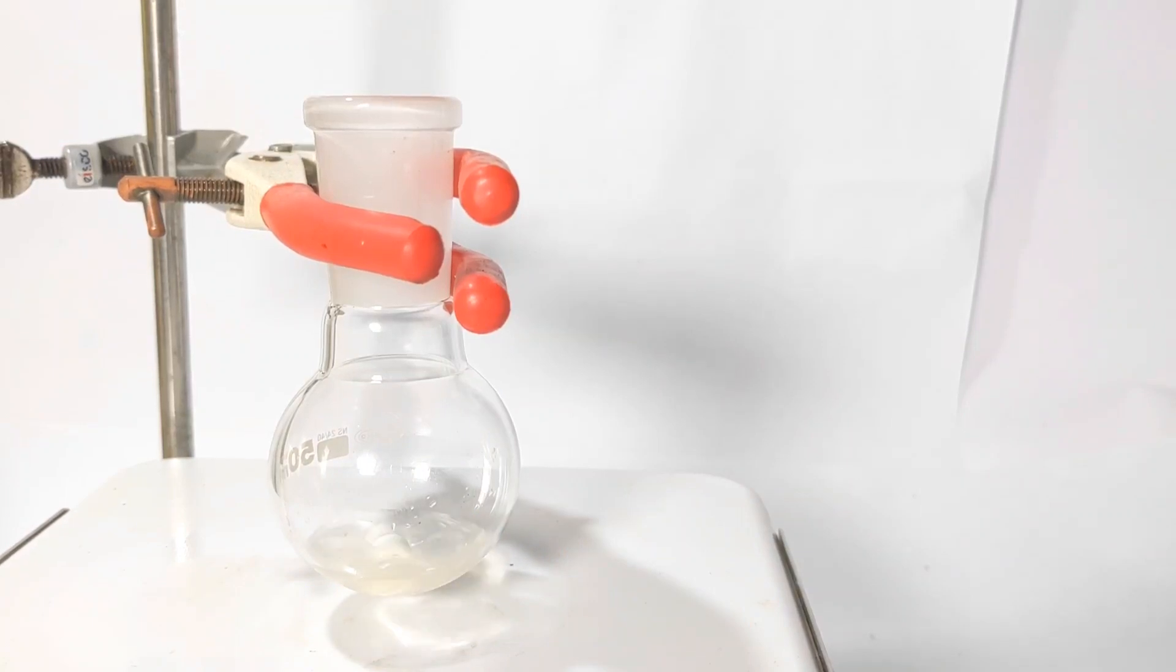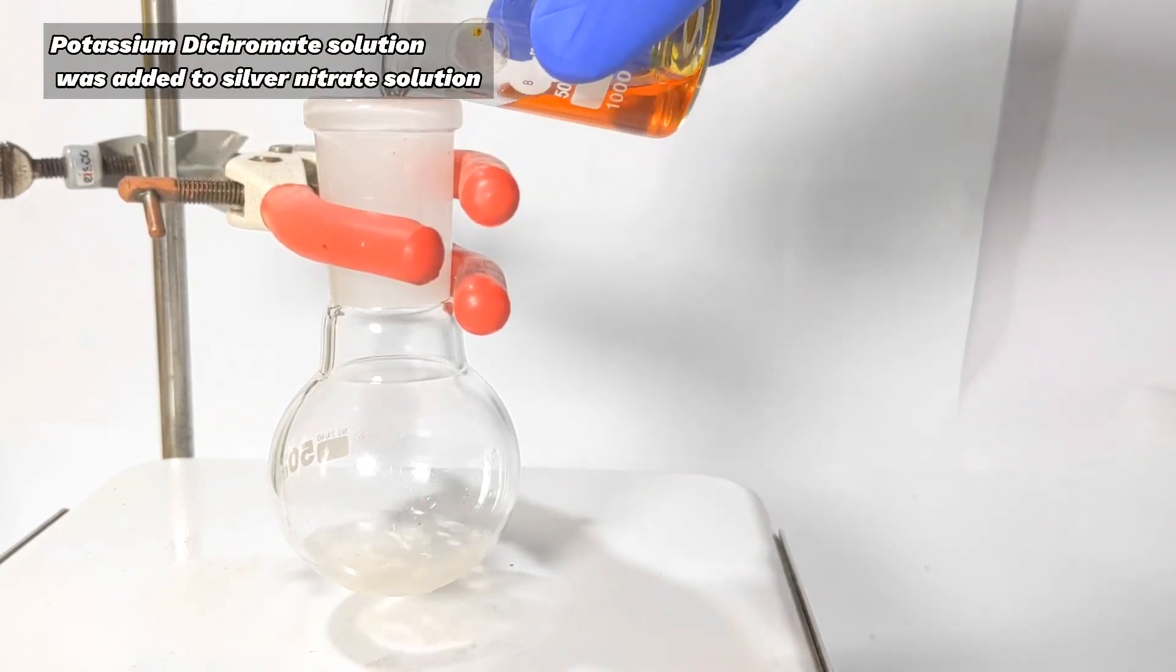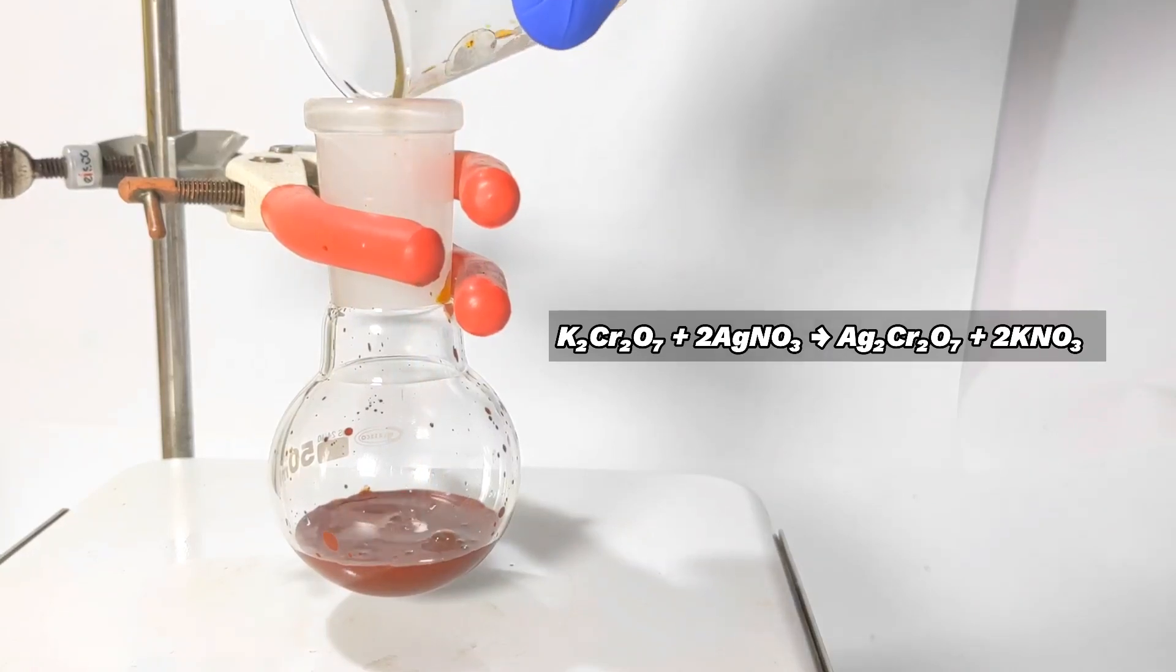Now to the silver nitrate solution with stirring was added potassium dichromate solution. Immediately you see the formation of a deep red colored precipitate, and this is the silver dichromate.